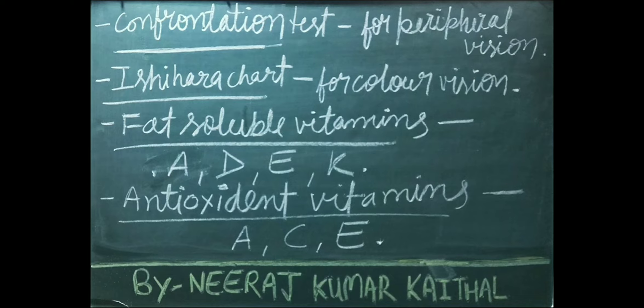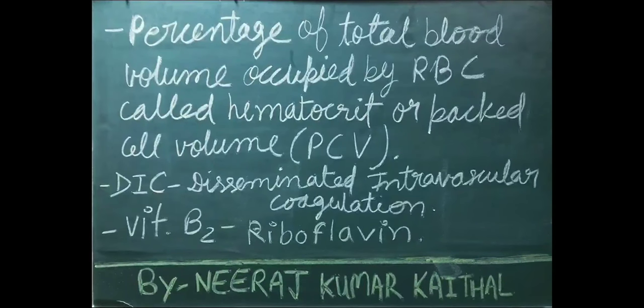Antioxidant vitamins are vitamins A, C, and E. The percentage of total blood volume occupied by RBCs is called hematocrit or packed cell volume. DIC stands for disseminated intravascular coagulation. Vitamin B2 is also known as riboflavin.